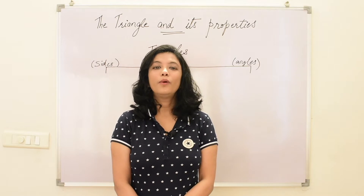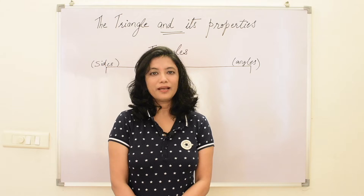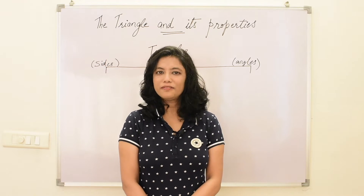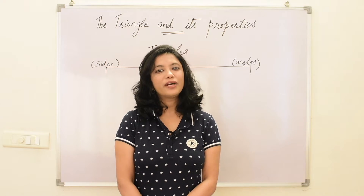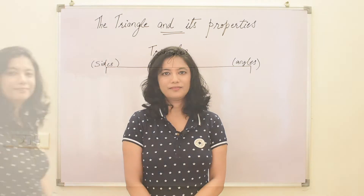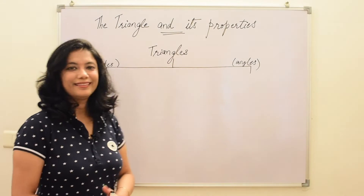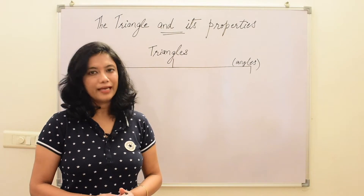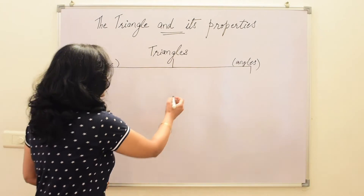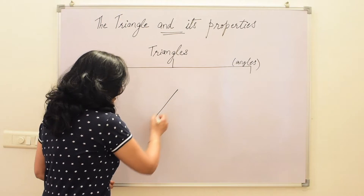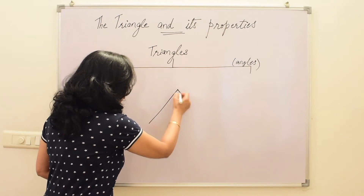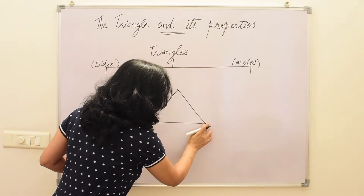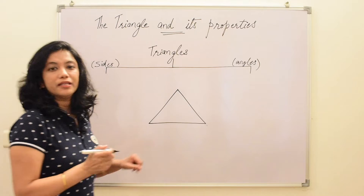Hello friends, welcome to CRISP class. I am Monica and today we will study triangle and its properties. We have already studied about triangles. We know that a triangle is a closed figure made up of three line segments.